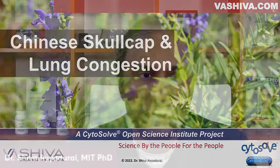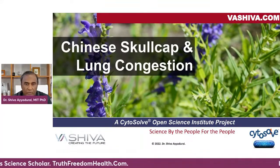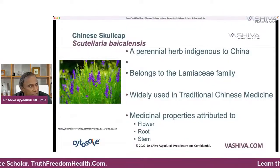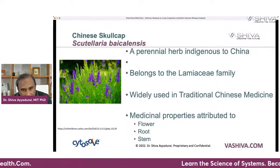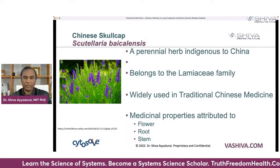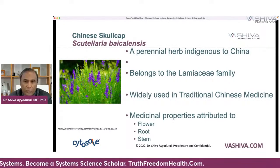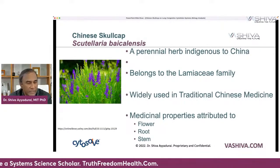Hello everyone, this is Dr. Shiva Ayodure. We're going to continue the series on lung congestion today, but we're going to be looking at another very interesting and powerful herb. It's a Chinese herb called Chinese Skullcap. Chinese Skullcap is called Scutellaria baicalensis. It's a perennial herb, indigenous to China, and belongs to the Lamiaceae family. It's widely used in traditional Chinese medicine.